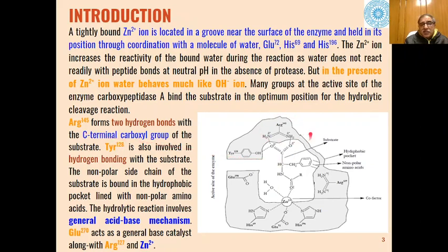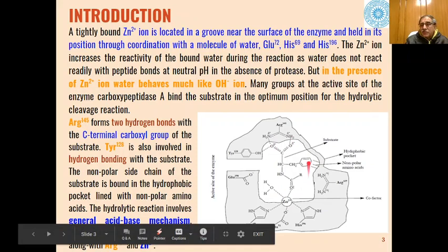Arginine 145 forms two hydrogen bonds with the C-terminal carboxyl group of the substrate, whereas tyrosine 128 is also involved in hydrogen bonding with the substrate. Similarly, the nonpolar part of the molecule substrate is present in the hydrophobic pocket of the enzyme, which is nonpolar in nature. This is how stable enzyme-substrate complex is formed between the enzyme and the substrate.